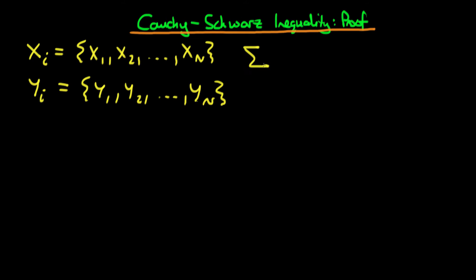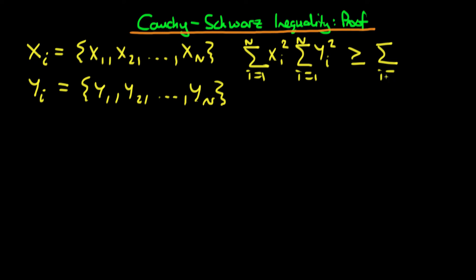It says that the sum from i equals 1 to n of xi squared, times the sum from i equals 1 to n of yi squared, has got to be greater than or equal to the sum from i equals 1 to n of xi times yi, all squared. Notice that we're squaring the entire sum on the right-hand side, whereas on the left-hand side we're summing together each of the elements squared.